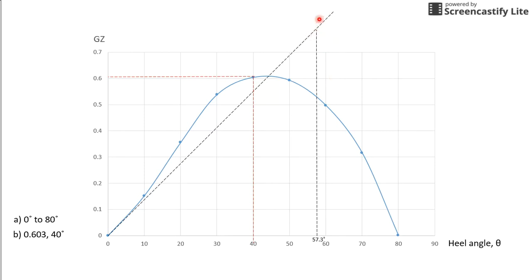So, from this intersection point to the 0 or to the origin will be where your GM(T) fluid is. So, this will be your completed GZ curve.